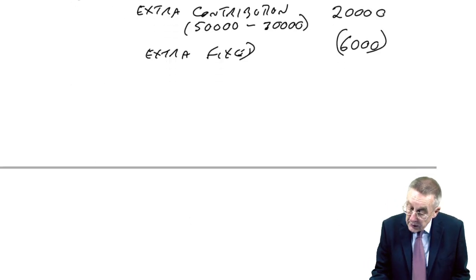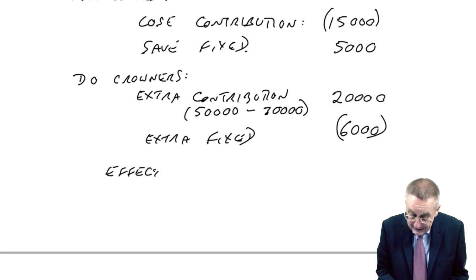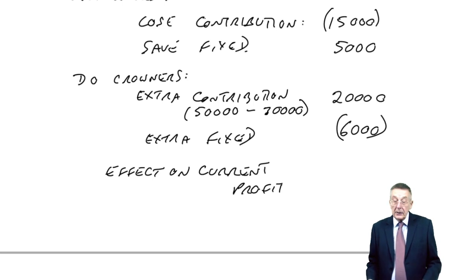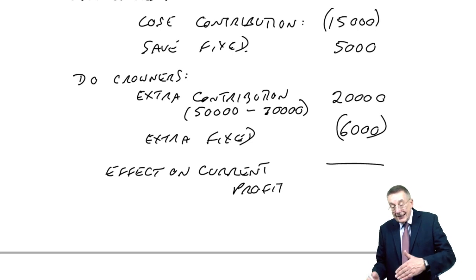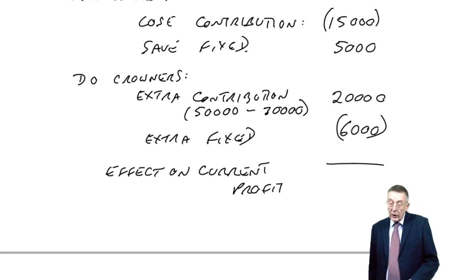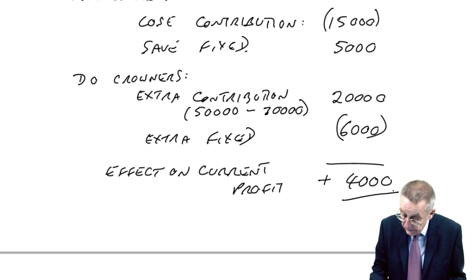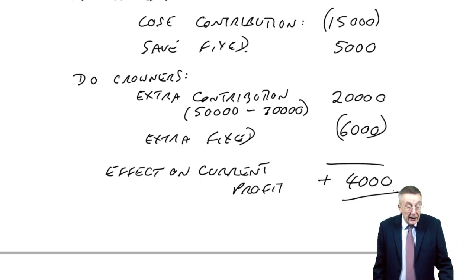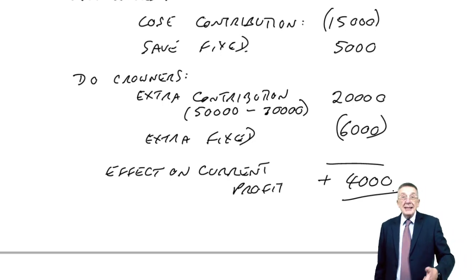So what's the overall effect on our current profit? We go down by 15,000 (lost contribution from rooks), up by 5,000 (saved fixed costs), up by 20,000 (crowners contribution), down by 6,000 (crowners fixed costs). Overall the profit goes up by 4,000. Stopping rooks and doing crowners increases current profit by 4,000 — from 5,000 to 9,000.